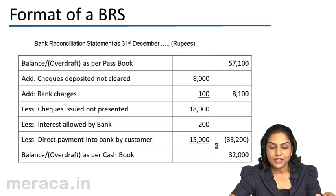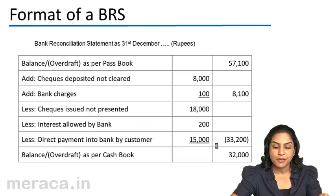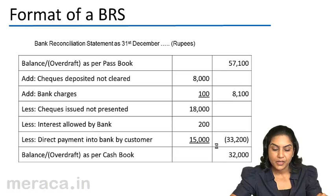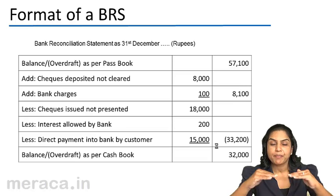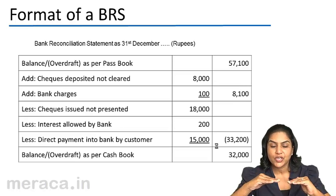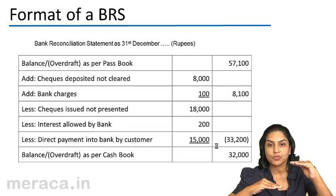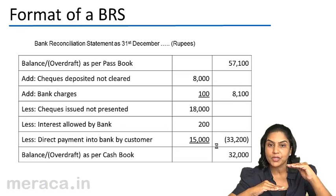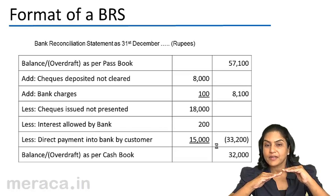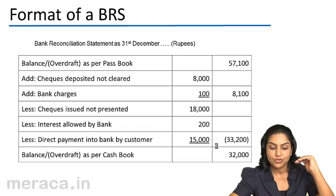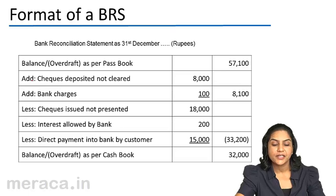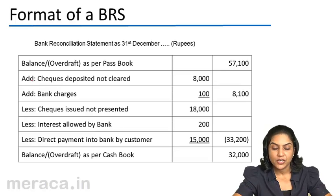Now the same example has been repeated, but this time we start with the balance as per passbook of $57,100. We have cheques deposited but not cleared. When cheques were deposited, the cashbook balance went up and the passbook balance remained here. We have started with the passbook in order to arrive at the balance as per cashbook, so we add the cheques deposited but not cleared.